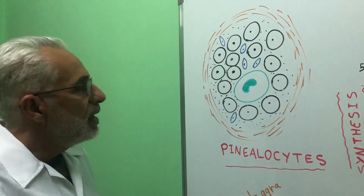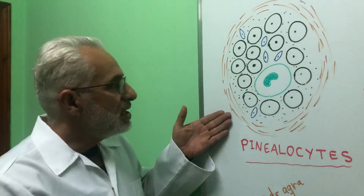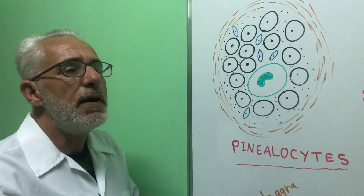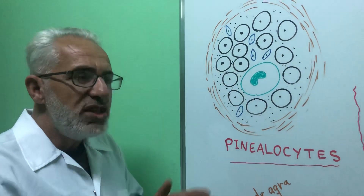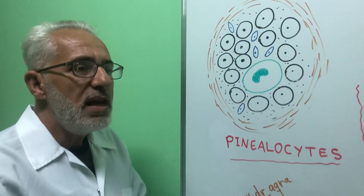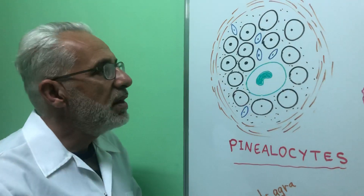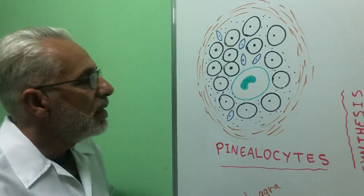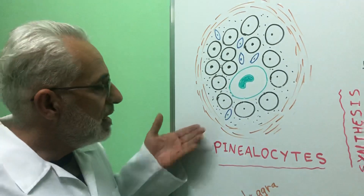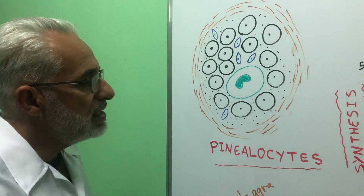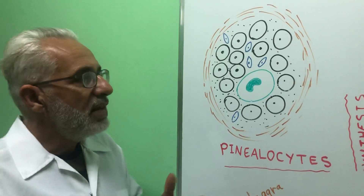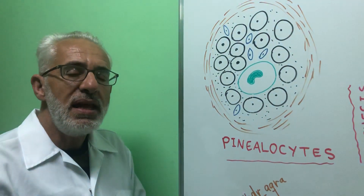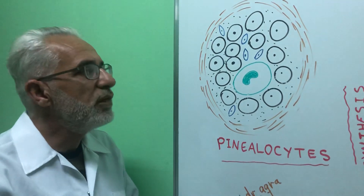The pineal gland is a small gland — about 3 to 8 millimeters in dimension — and its weight is only 100 milligrams, but in spite of that it releases an important hormone which is melatonin, and two other hormones: serotonin and DMT, dimethyltryptamine.